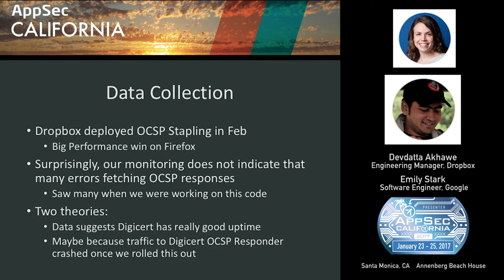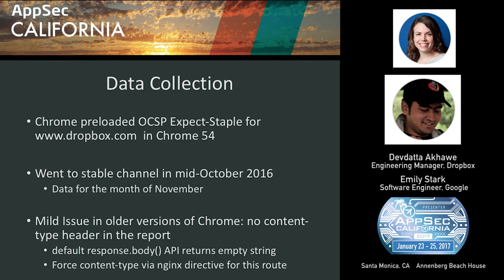Most of the data I'll be talking about is from the month of November. If you get loaded into the Expect Staple list in Chrome, one mild issue in Chrome 54 or 55 is that Chrome didn't send the Content-Type JSON header, so the default body-parsing function in most web servers would return an empty string. You have to do something like request.get_bytes() instead, or just rewrite in Nginx to force content-type application/JSON. The JSON report from Chrome has several fields: a datetime of when the client was connecting, a response status indicating what Chrome thought of the OCSP response — whether it was missing, invalid, or had an invalid date — and the actual OCSP response itself.